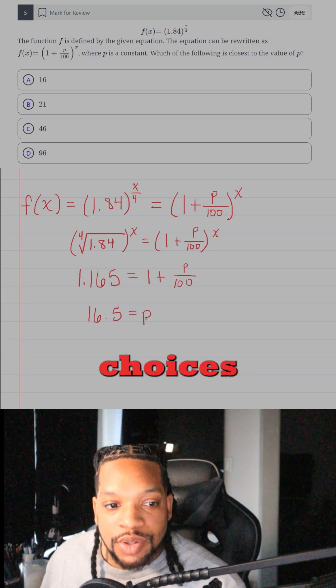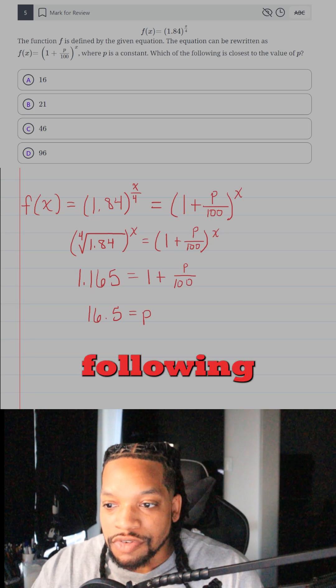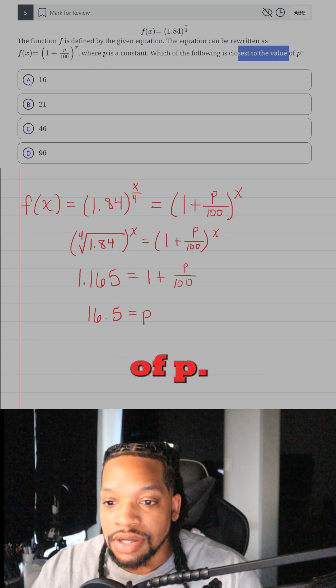And looking at my answer choices, 16.5 isn't an answer choice, but it says which of the following is closest to the value of P. So I'm just going to go A.